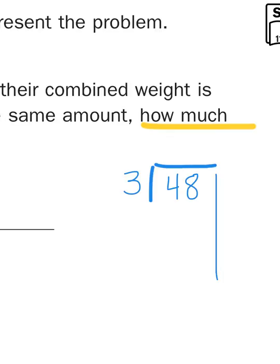I have to ask myself: how many groups of 3 can I get out of 48? Well, 3 times 10 gives me 30, and 3 times 20 gives me 60 — 60 is too big. So I know that I can get at least 10 groups, because 3 times 10 is 30. I'm going to write the number 10 off to the side — this is a partial quotient, a partial number of groups I can get out of 48. Then I'm going to subtract 48 minus 30: 8 minus 0 is 8, 4 minus 3 is 1, which leaves me with 18.